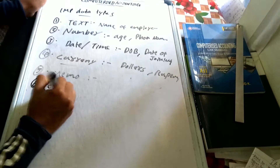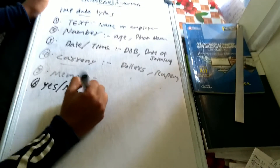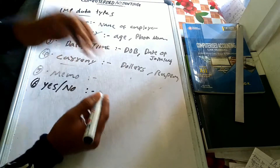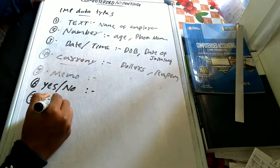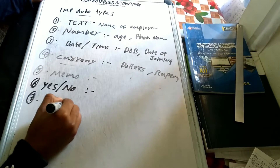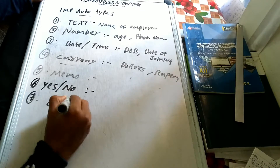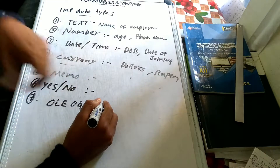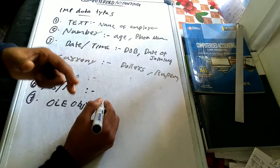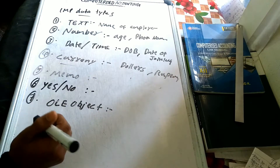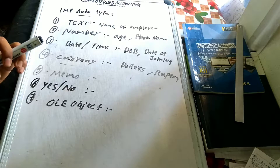Next is yes or no — it stores yes or no values. Next is OLE Object. OLE Objects are used for MS Excel, MS Word, graphs, and charts. This is the 7th data type.